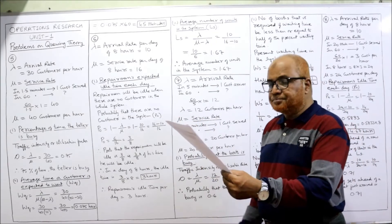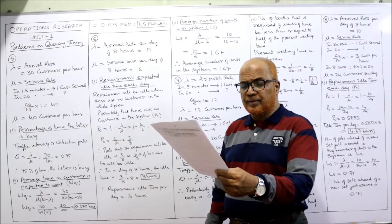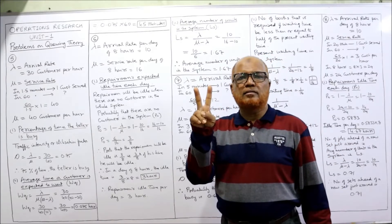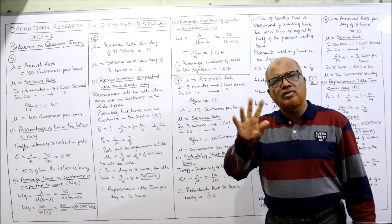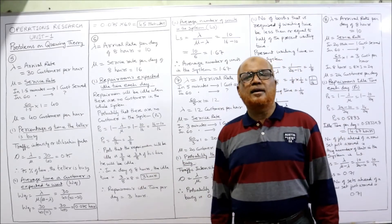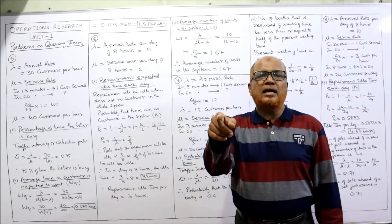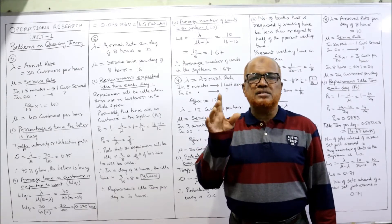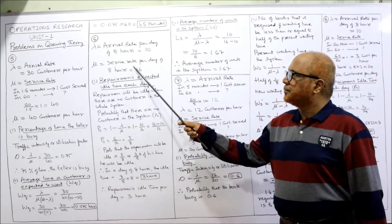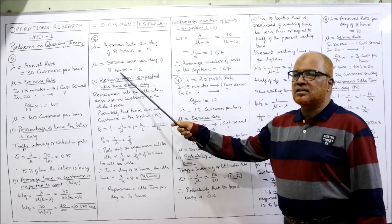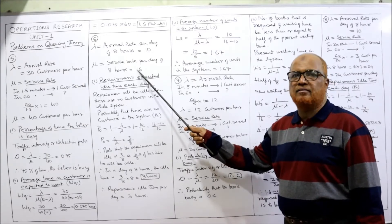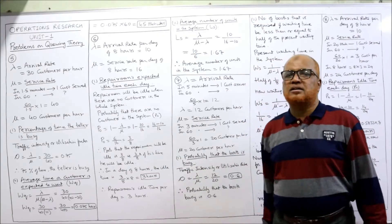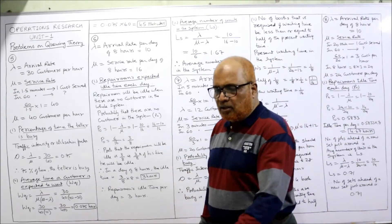Service rate per day of 8 hours is 16. How? Every half an hour — that is 30 minutes — one set is served, so in one hour two sets are serviced. There are 8 hours in a day, so 8 into 2 equals 16. In one day, 16 TV sets can be serviced. So mu = 16 sets per day of 8 hours. The first question is: what is the repairman's expected idle time each day?